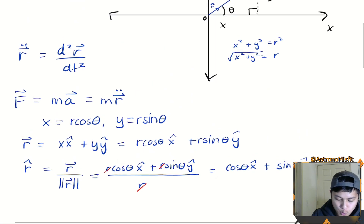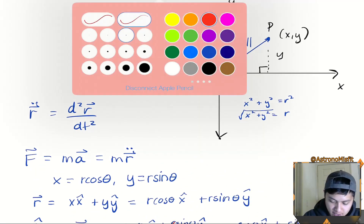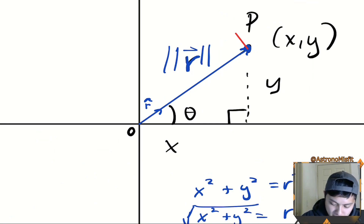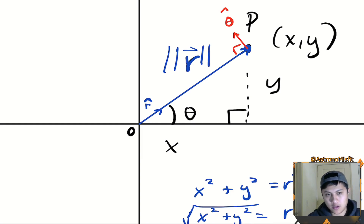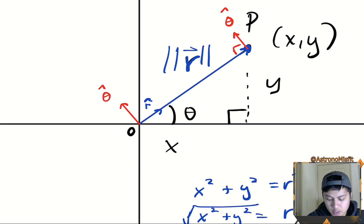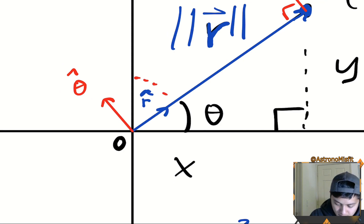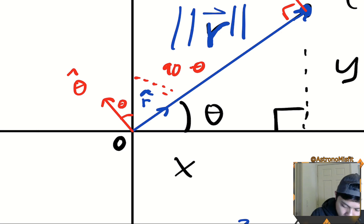Now I'm going to define a new vector: the theta-hat vector. The theta-hat vector is a unit vector that points in the direction of theta, and it's always going to be at a right angle to the r-hat vector because they are orthogonal to each other. I can draw the theta-hat vector at the origin. This is the angle theta, so this angle up here has to be 90 minus theta, and there is a right angle between r-hat and theta-hat.